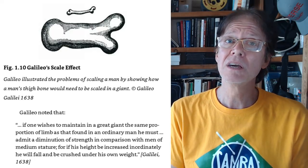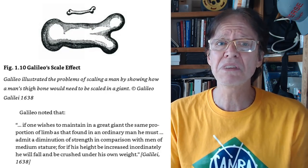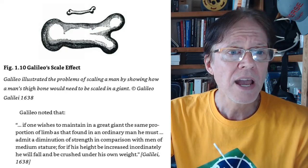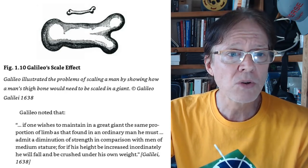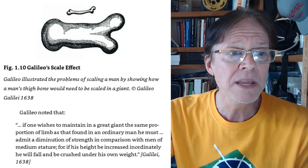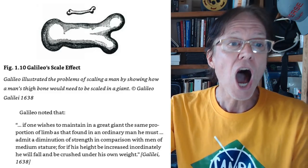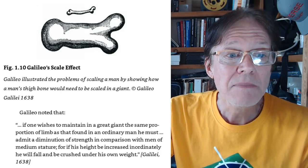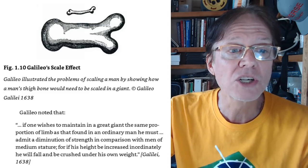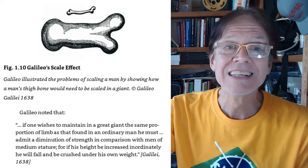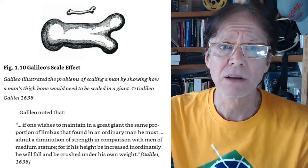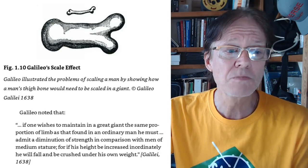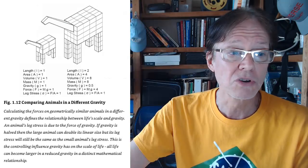But that's not what we see in dinosaurs. We see pretty decent-sized bones for the structure if they were in our gravity today, but much smaller. So Galileo noted, if one wishes to maintain in a great giant the same proportion of limb as found in ordinary man, he must admit a diminution of strength in comparison with men of medium stature. For if his height be increased inordinately, he will fall and be crushed under his own weight. This is Galileo Galilei, 1638. Hey, Spielberg, you didn't even read this? You can't say that it's not modern times. That's a pretty long time ago. So this has been thought about by many brilliant minds, including Mr. Stephen Hurrel.